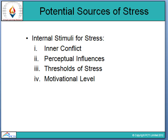The three types of internal stress sources are: inner conflict, perceptual influences, and threshold of stress, along with a fourth — motivational level. Inner conflict means that for many people, stress is a constant compensation regardless of how favorable or unfavorable external conditions may be. Internally, non-specific fear, anxiety, and guilt feelings keep the body in a state of readiness for emergency on a continuing basis.